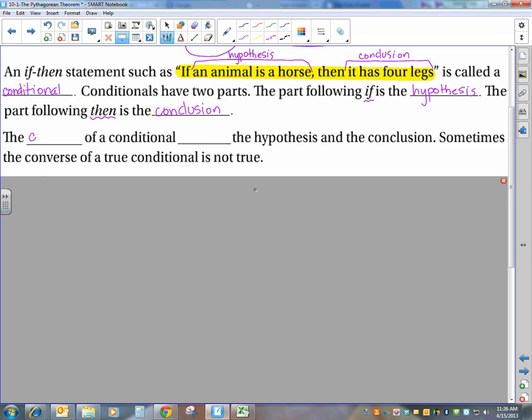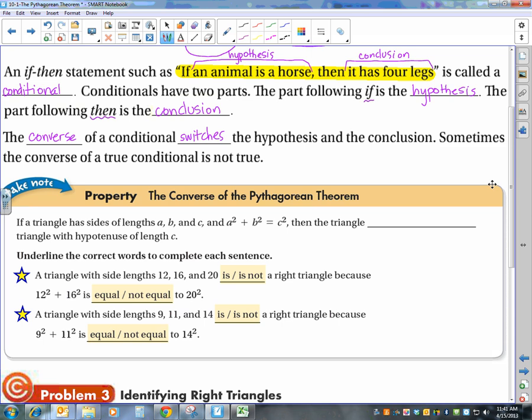Now, we have something called the converse of a conditional statement. And you get that by - it switches the hypothesis and the conclusion. And sometimes the converse of a true conditional is not true. So we have to look at each individual case. But why that's important is because we're going to actually use that information to talk about the converse of the Pythagorean theorem. Remember our Pythagorean theorem said if I have a right triangle then I know that a squared plus b squared equals c squared. So our converse is going to be if the triangle has three sides such that a squared plus b squared equals c squared then the triangle is a right triangle with hypotenuse c.